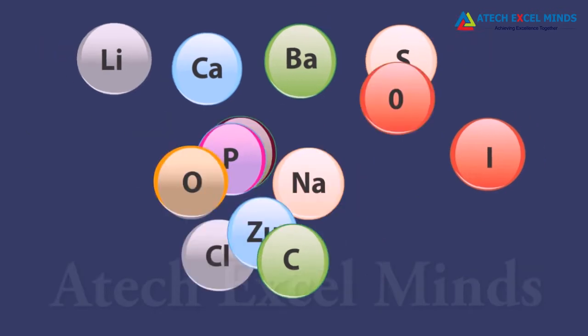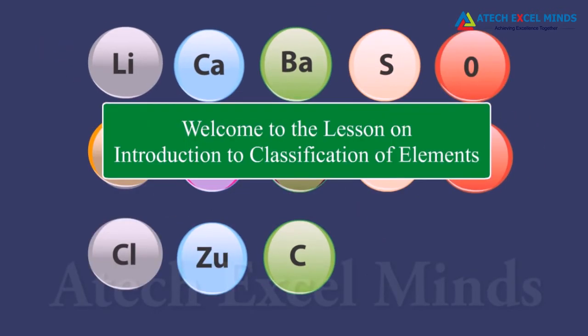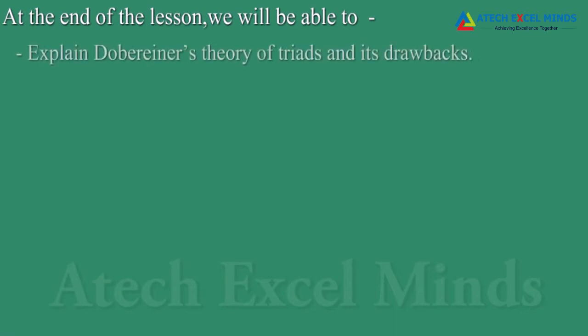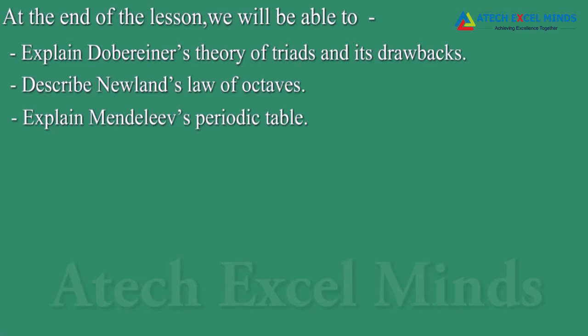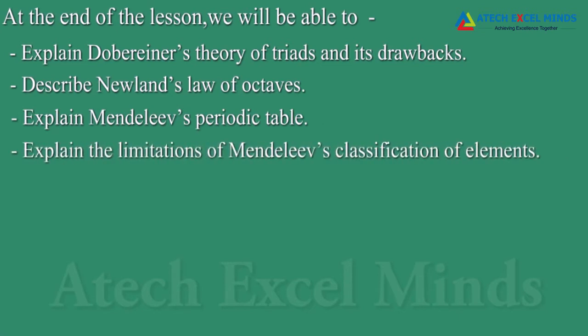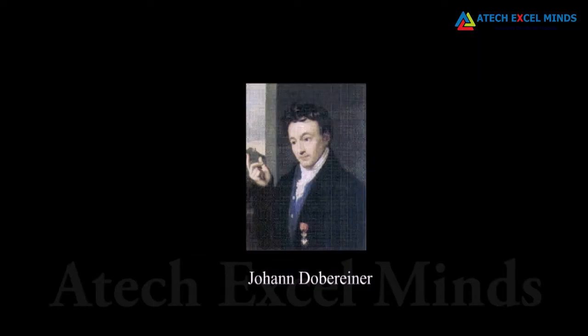Welcome to the lesson on introduction to classification of elements. At the end of the lesson, we will be able to explain Dobereiner's theory of triads and its drawbacks, describe Newlands' Law of Octaves, explain Mendeleev's periodic table, and explain the limitations of Mendeleev's classification of elements. Many scientists made several attempts to classify elements according to their properties.